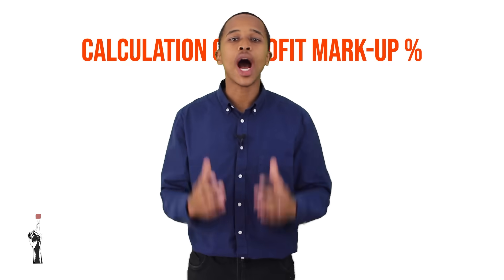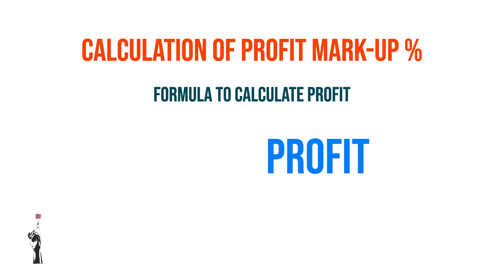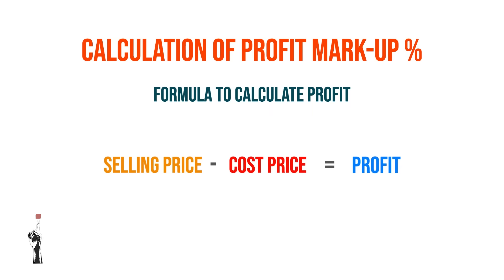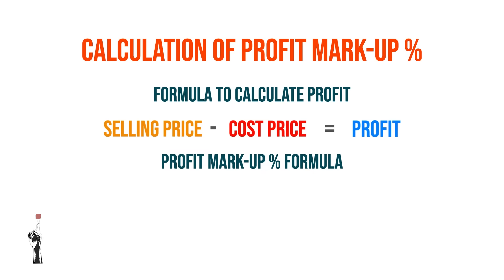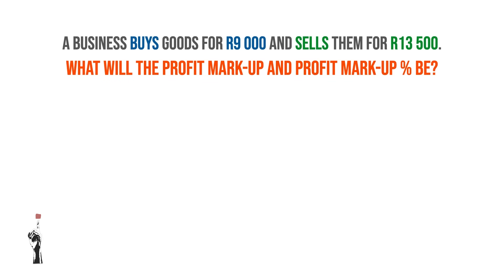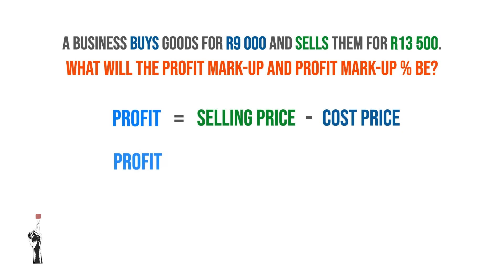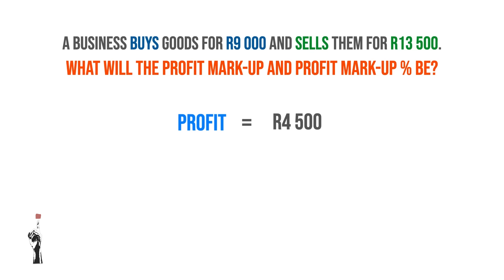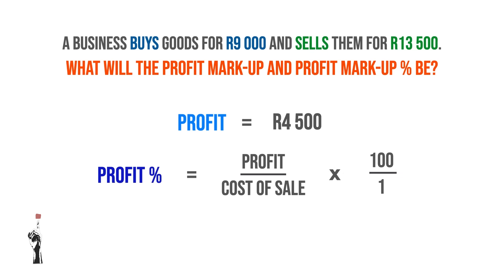Lastly, we need to know how to calculate the profit markup. The formula for profit is: selling price minus cost price equals profit. The formula for profit markup percentage — know this off by heart — is: profit divided by cost of sales, times 100 divided by 1. For example: a business buys goods for R9,000 and sells them for R13,500. Profit = R13,500 − R9,000 = R4,500. Profit markup percentage = R4,500 ÷ R9,000 × 100 = 50%. This means the owner makes a 50% profit.